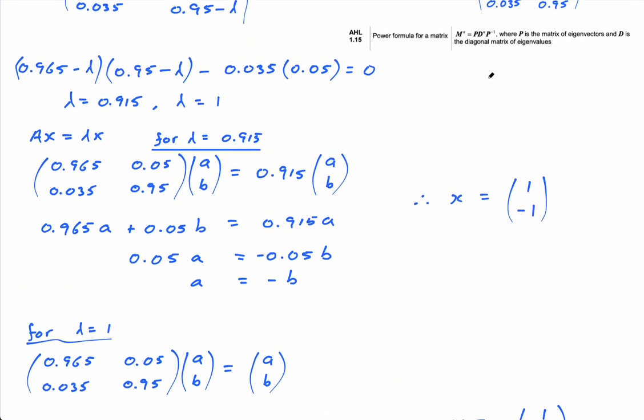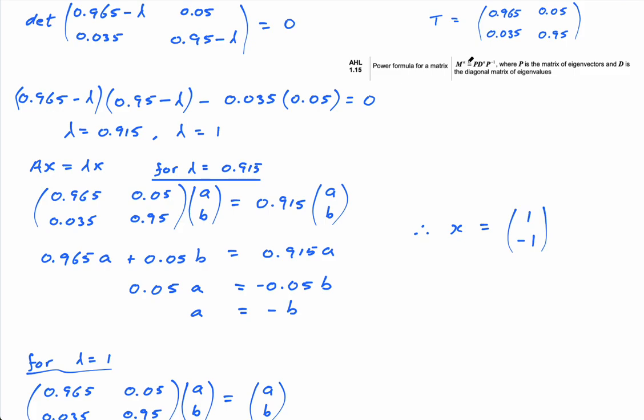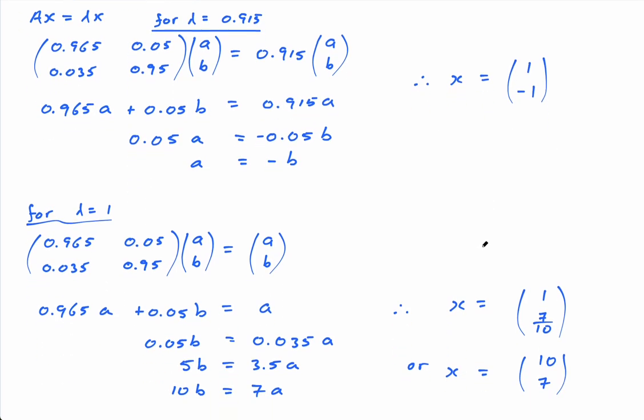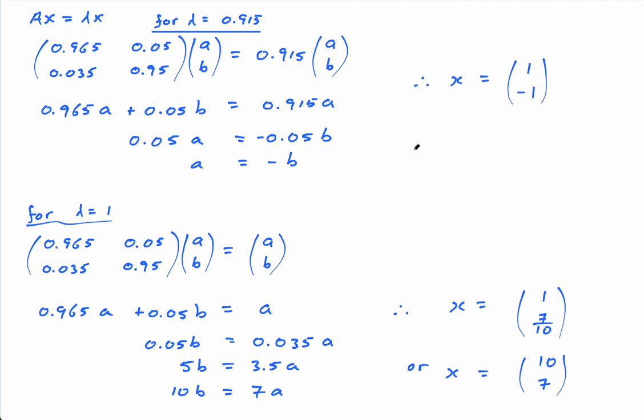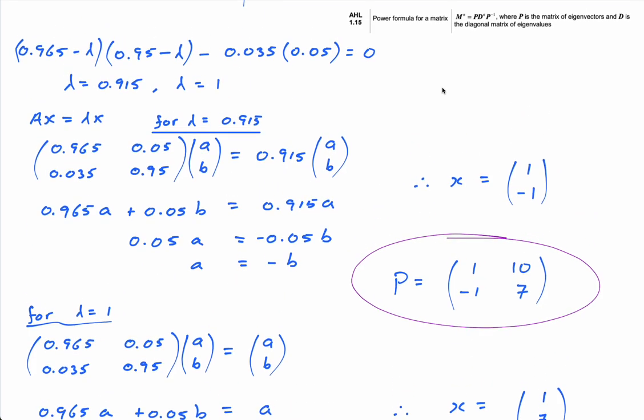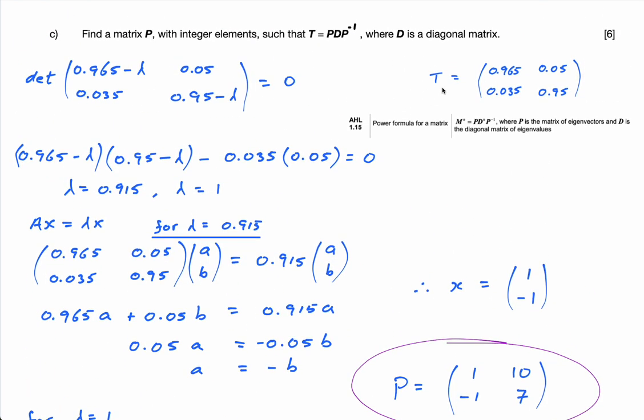So I have my eigenvectors, but P is the matrix of eigenvectors. So P, therefore P is, hang on I'm just going to write it here because I've run out of space. P is equal to 1, negative 1, 10, 7. That is my, let me just put a ring around that. That is P, which is the matrix of eigenvectors from this matrix. Okay, hope that makes sense.